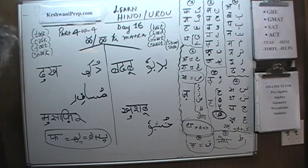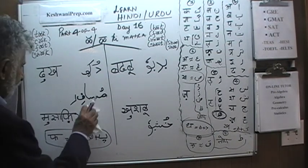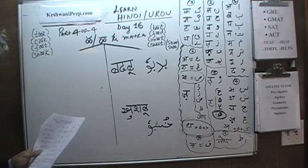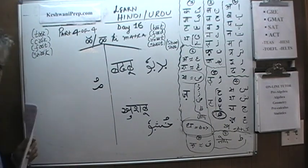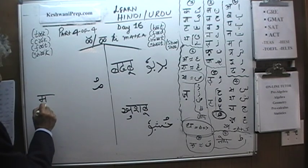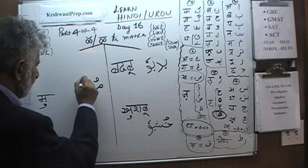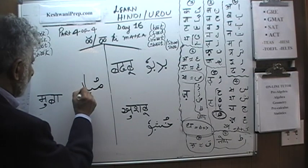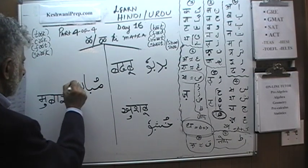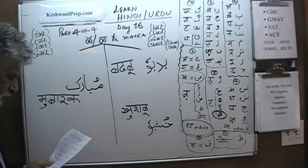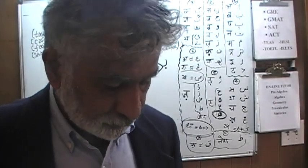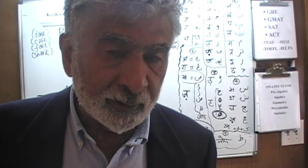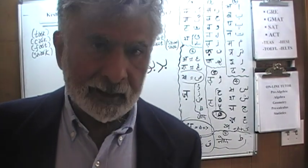With Choti Uki Matra, let's write 'Mubarak.' M with Uki Matra makes Mu, then Ba, then Ra, then Kaf. Mubarak means congratulations. When Muslims greet each other at Eid, they say 'Eid Mubarak' — Happy Eid.